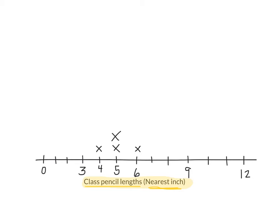Let's keep going. Tatiana, how long was your pencil? Four inches. So now we're gonna put another X above four. When we have another pencil of the same length, we just add another X on top. Kashyap? Six. Let's go ahead and add six inches. Avani? Five — so we're gonna add another X for five inches. Arnav? Five inches. Sornima? Five inches. Keep adding those X's.